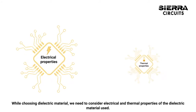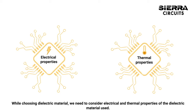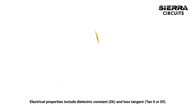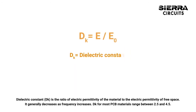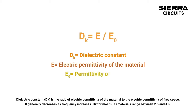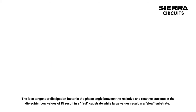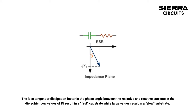When choosing a dielectric material, we need to consider its electrical and thermal properties. Electrical properties include dielectric constant and loss tangent. The dielectric constant is the ratio of electric permittivity of the material to that of free space; it generally decreases as frequency increases, and for most PCB materials ranges between 2.5 and 4.5. The loss tangent, or dissipation factor, is the phase angle between resistive and reactive currents in the dielectric. Low values of DF result in a fast substrate, while large values result in a slow substrate.